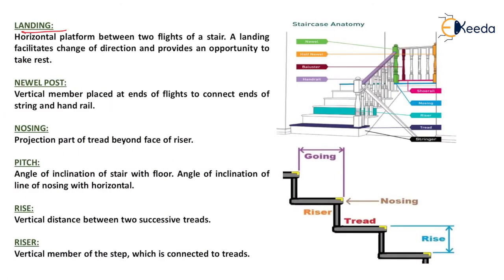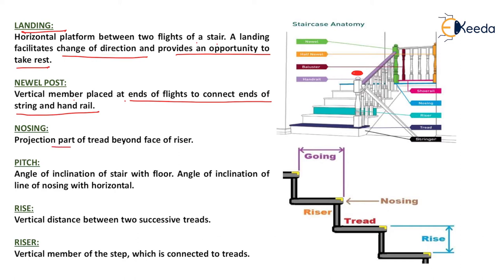Landing is the horizontal platform between two flights of a stair. A landing facilitates change of direction and provides an opportunity to take rest. Newel post is the vertical member placed at the end of flights to connect the end of the string and handrail.